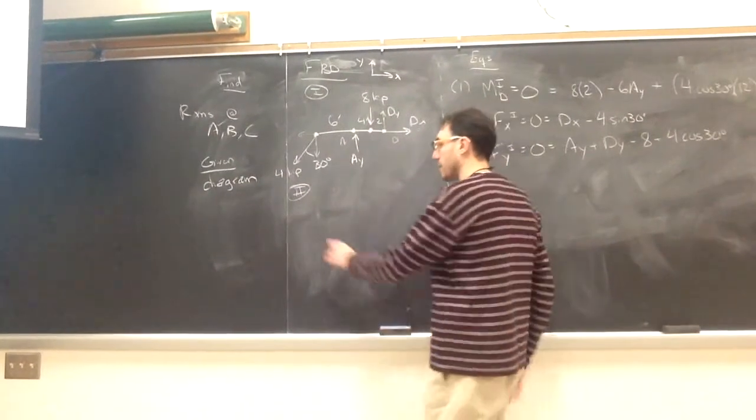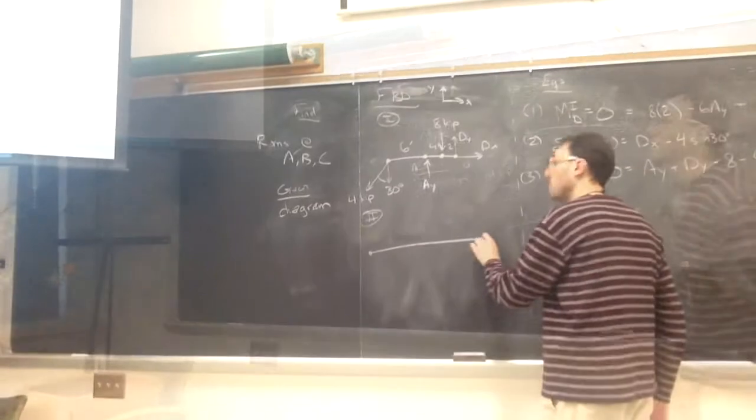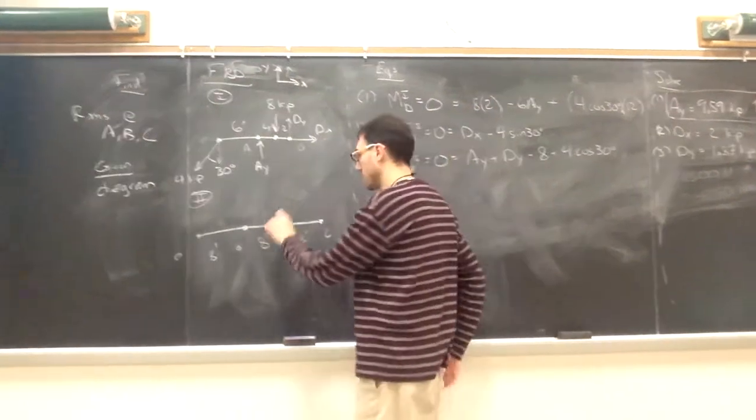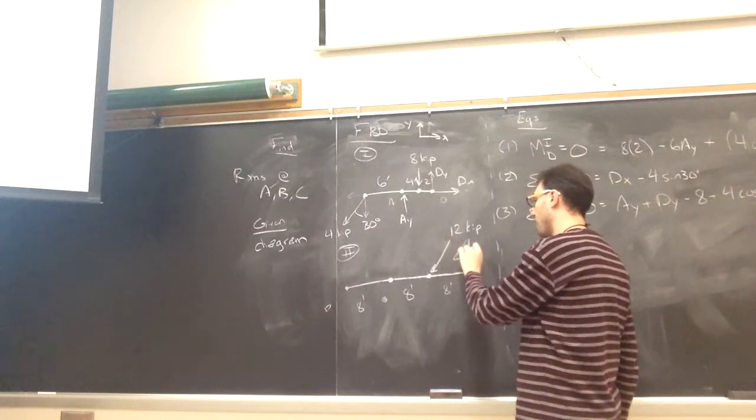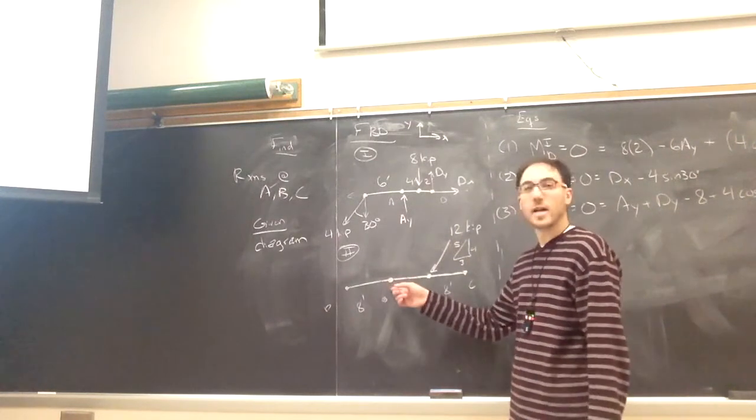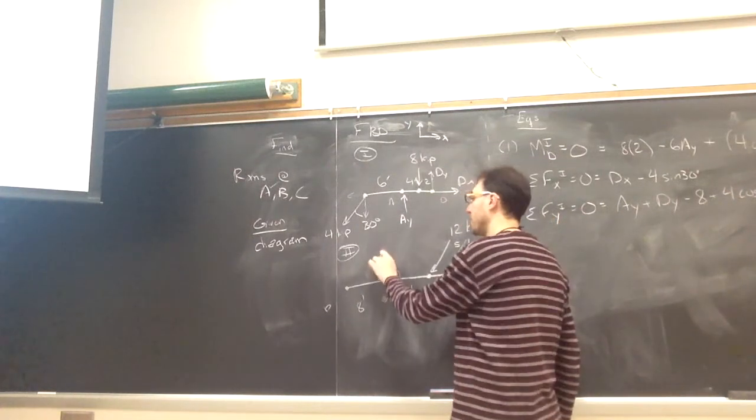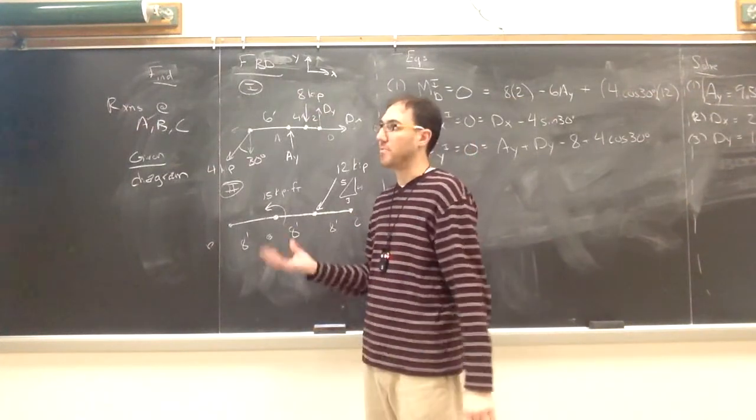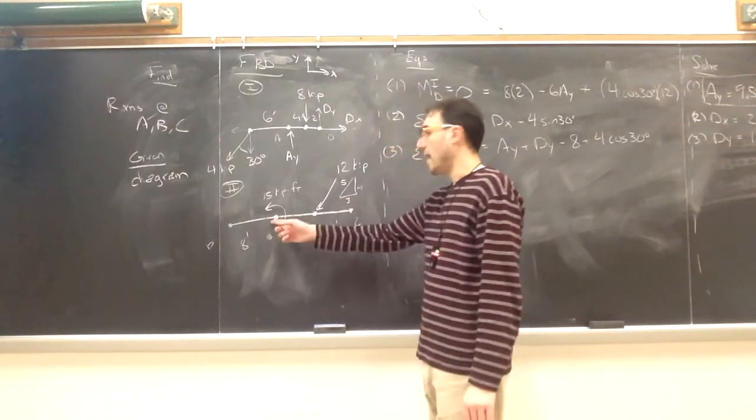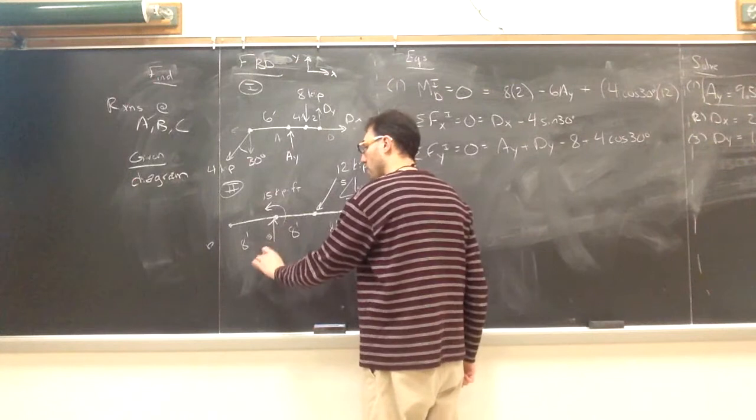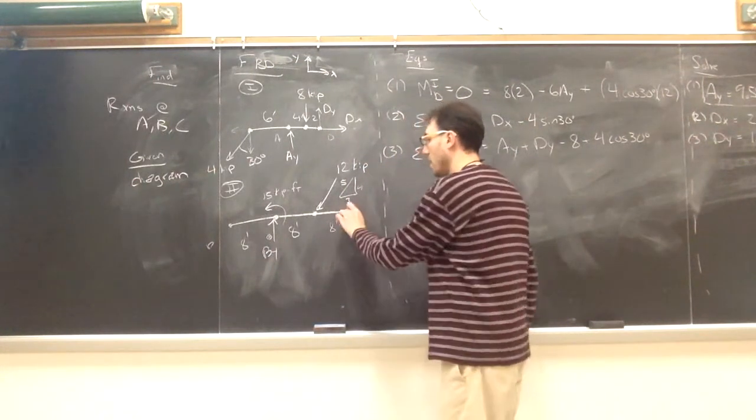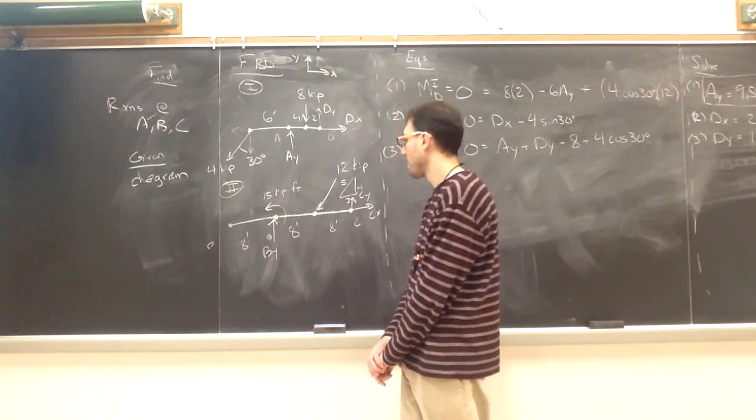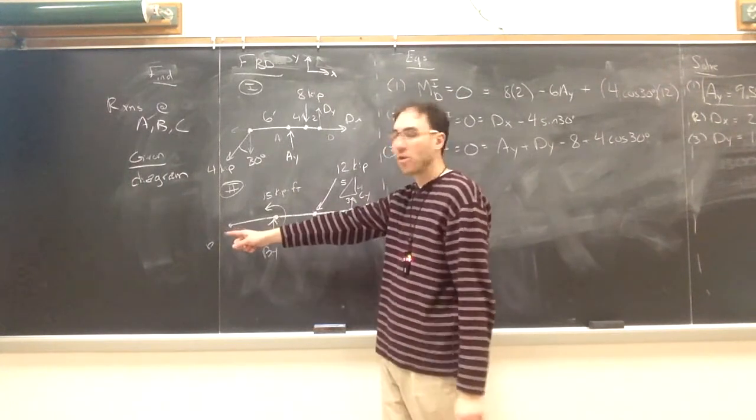I can now draw DBC. Starting with the external forces that act on this, I have a 12 kip force. And that's at a 3, 4, 5 triangle. And I have a couple acting at point B, 15 kip feet. Those are the only external forces acting. Then I have my supports, external supports at B and at C. I have that roller at B, which only exerts a vertical force. An external pin at C, I'm just going to say, has a CX right and a CY up.